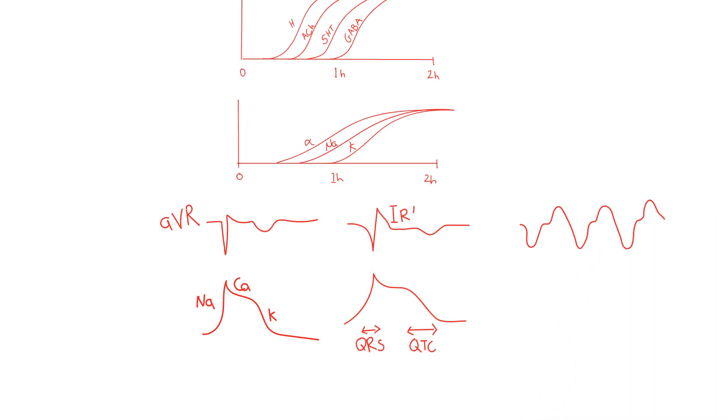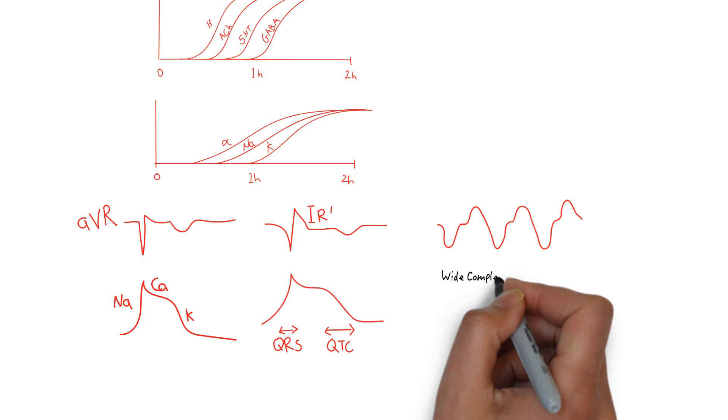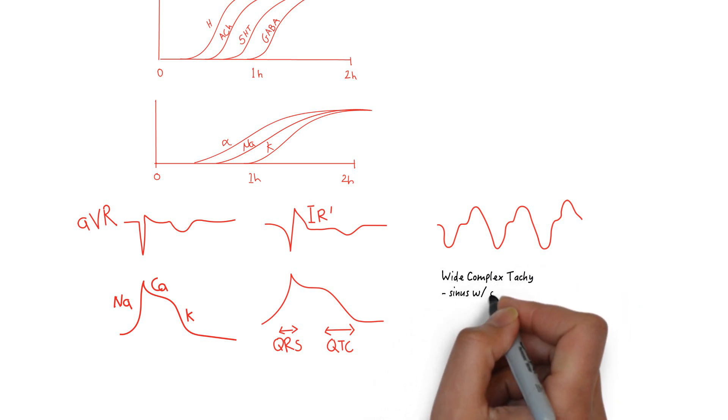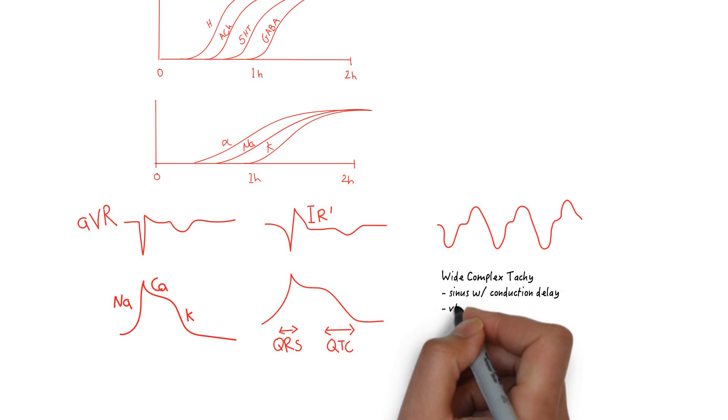The natural history of TCA overdose culminates in a wide complex tachycardia, which is most likely sinus tachycardia with conduction delay. VTAC is always on the differential, but less common.